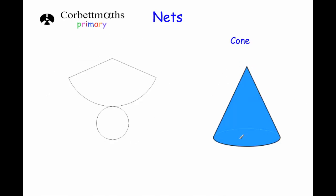The next 3D shape is the cone, and this is the net of the cone. The cone has got the round circle at the base, and then it's got the curved surface meeting at the top, and this would be its net. It's a circle and you've got this sector which would then fold up and around to make the cone.